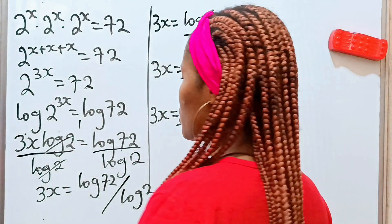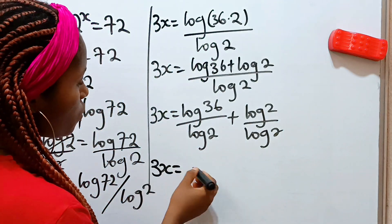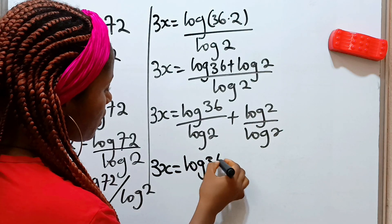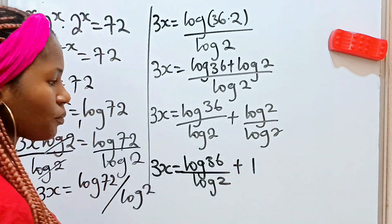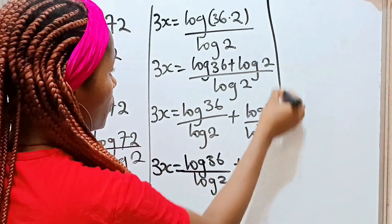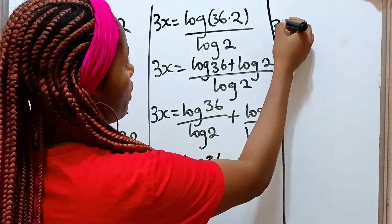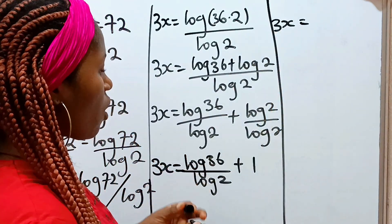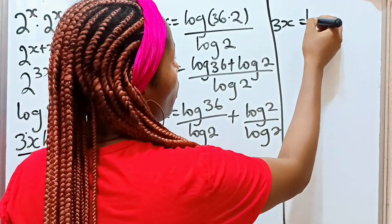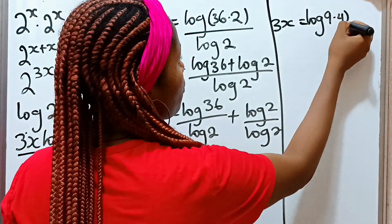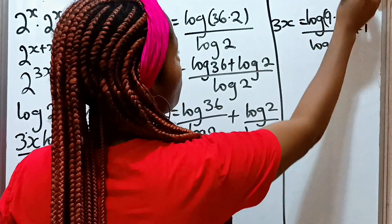So if we continue to solve, we get 3x is equal to log 36 divided by log 2 plus 1. Now log 36 can be expressed as 9 multiplied by 4. So we have log of 9 times 4, divided by log 2, plus 1.